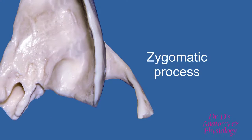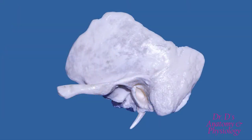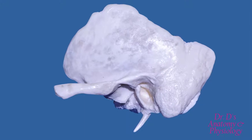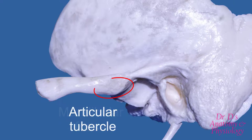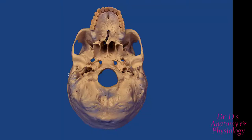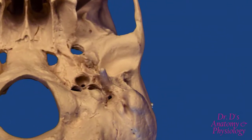Extending from the squamous part we have the zygomatic process. You can see how it extends first laterally then anteriorly to join with the temporal process of the zygomatic bone. Here in lateral view we can see the mandibular fossa, also known as the glenoid fossa, and right in front of it we have the articular tubercle. I want to show you an inferior view using this articulated skull to give a better understanding of these structures.